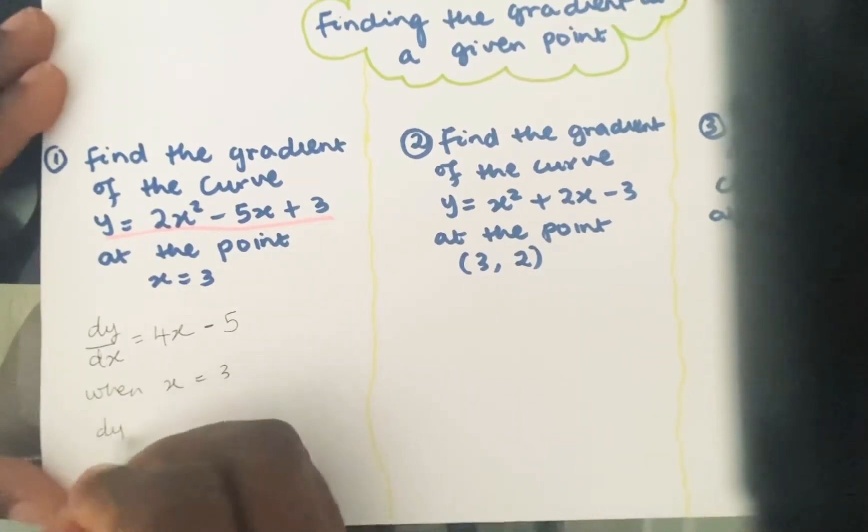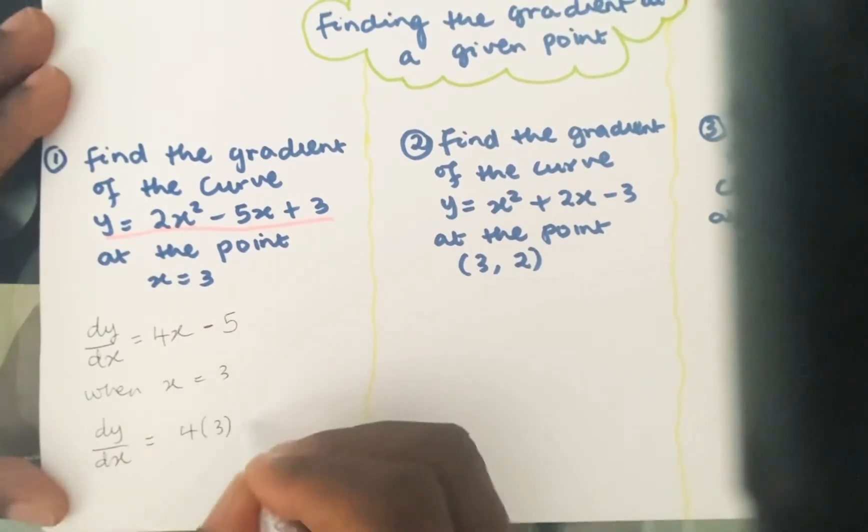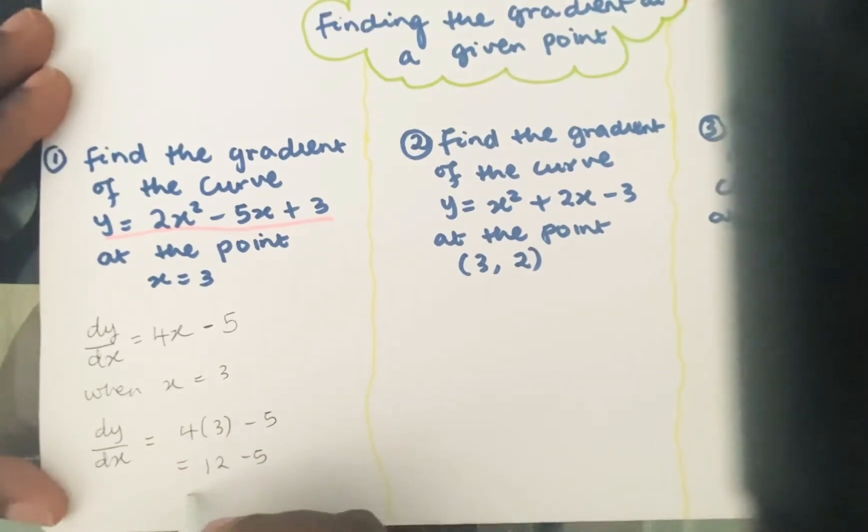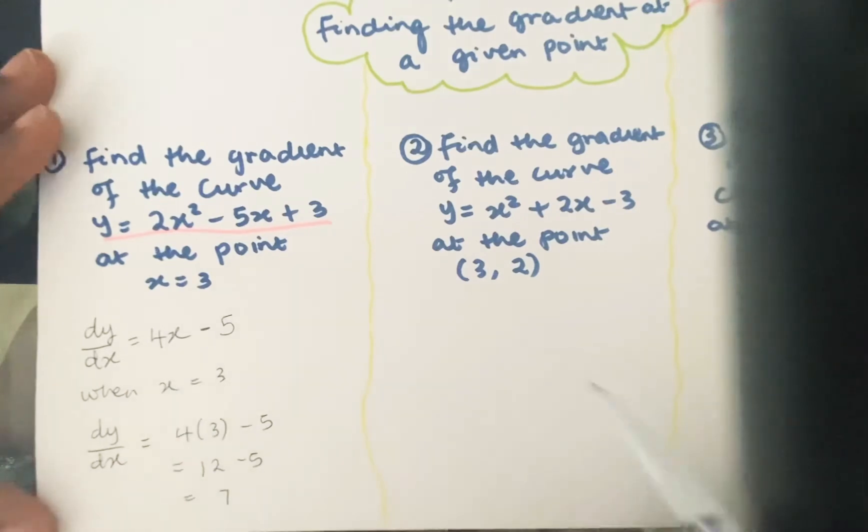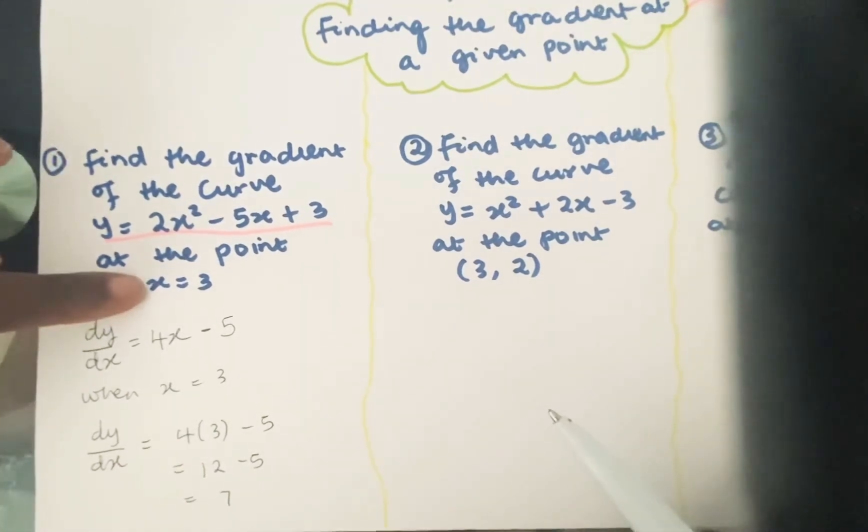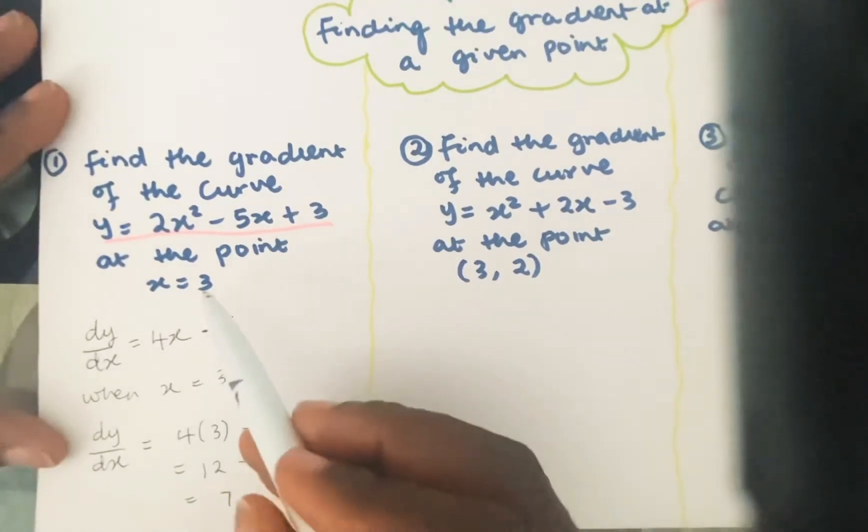dy by dx would be equal to 4 times 3 minus 5, which is equal to 12 minus 5, which is equal to 7. So that's the gradient at that particular point. That's the gradient of that curve at that particular point when x is equal to 3.